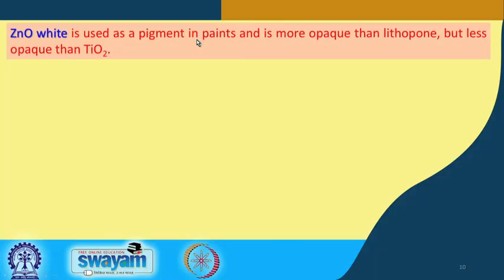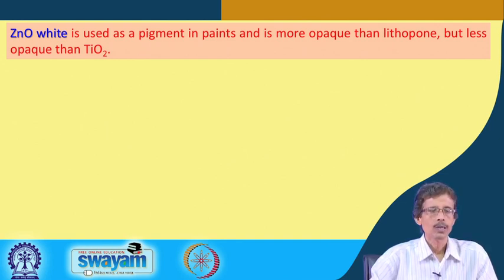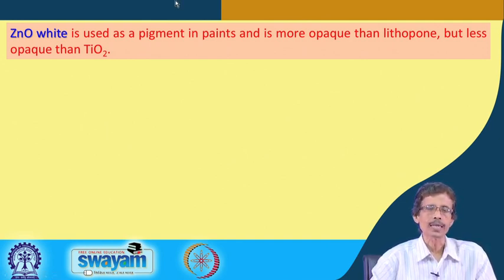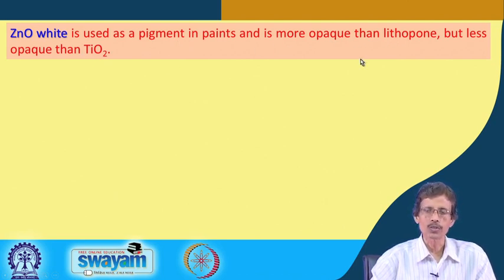Hello and welcome back to the class where we are talking about white colored pigments only. After TiO2, we will now take the example of zinc oxide white. It can be used like titanium dioxide and also in comparison to lithopone, which we will also see. Zinc oxide is more opaque than lithopone.